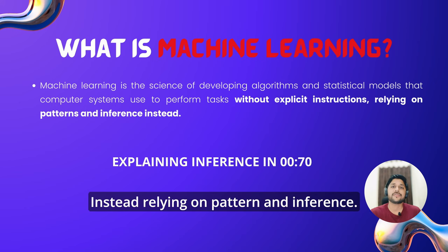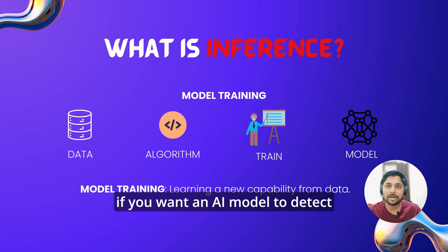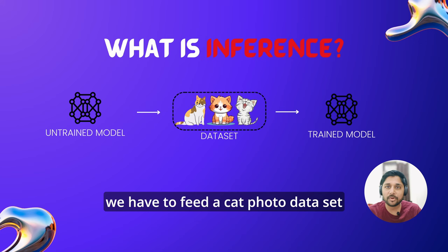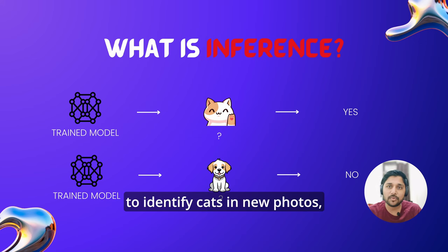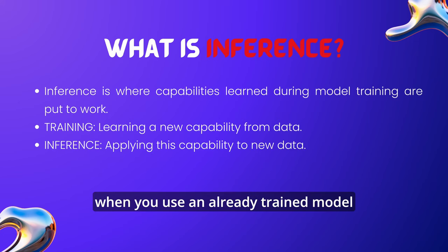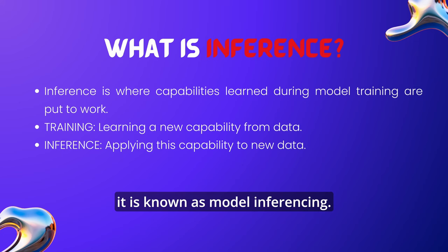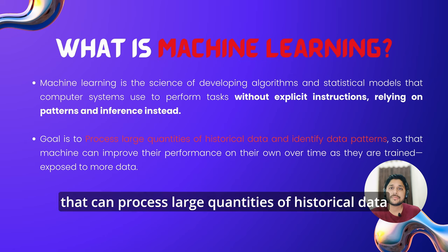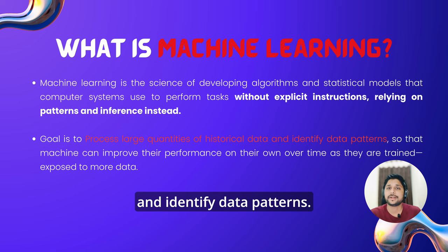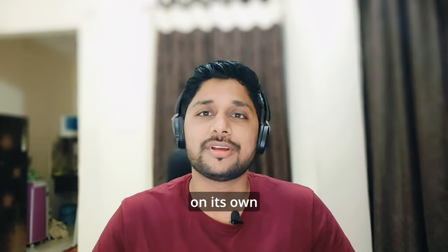As previously discussed, AI must train its model on a dataset to learn a new capability or feature — this process is known as model training. For example, if we want an AI model to detect whether a photo has a cat in it or not, we have to feed a cat photo dataset to train our model. And when you use this already trained model to identify cats in new photos, that process is known as model inferencing. Basically, when you use an already trained model on new data to utilize the capabilities on which it was trained, it is known as model inferencing. AI's goal is to make a self-learning system that can solve cognitive tasks, while ML's goal is to make systems that can process large quantities of historical data and identify data patterns. The more data used, the better the model will get, enabling a computer system to continue learning and improving on its own based on experience — that is, to become a self-learning system and develop artificial intelligence.